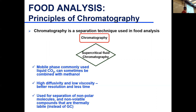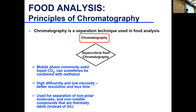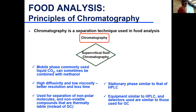Liquid CO2 is non-polar, so it's mostly used for separation of non-polar molecules that are thermally labile. If you have non-polar molecules that would degrade in GC due to temperature gradients, supercritical fluid chromatography works well. Sometimes methanol is added to make the mobile phase a little more polar. The stationary phase can be similar to that used in HPLC.